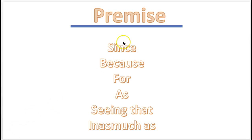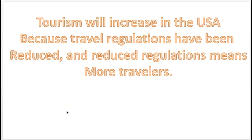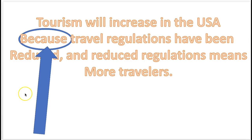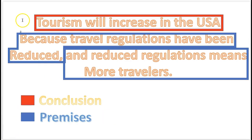We're going to start with practice problems on identifying the premise. Press pause in the video, then resume to find out the answer. Here's the first practice question: identify the premise and the premise indicator word. 'Tourism will increase in the USA because travel regulations have been reduced, and reduced regulations means more travelers.' The premise indicator word is 'because.' The conclusion is 'Tourism will increase in the USA,' and the two premises follow. The conclusion is in the red box and the premises in the blue.